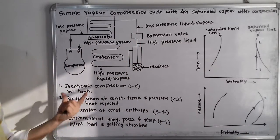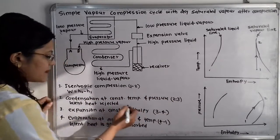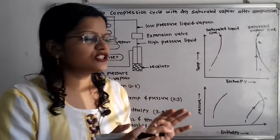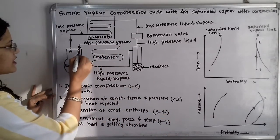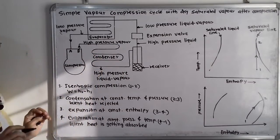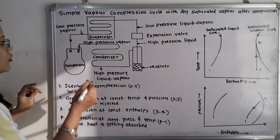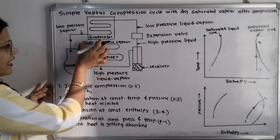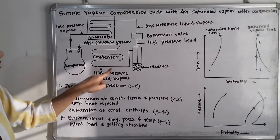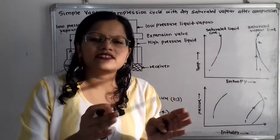After compression, the next process is condensation, which takes place at constant temperature and pressure. High pressure, high temperature vapor refrigerant exits the compressor and enters the condenser. In the condenser, cooling takes place: the refrigerant enters as high pressure, high temperature vapor and is converted into a high pressure, high temperature liquid-vapor mixture, so there is a phase change.